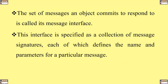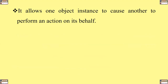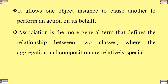This interface is specified as a collection of message signatures, each of which defines the name and parameters for a particular message. Association is therefore a relationship between two classes. It allows one object instance to cause another to perform an action on itself or on its own behalf. Association is the more general term that defines the relationship between two classes, where aggregation and composition are relatively special.